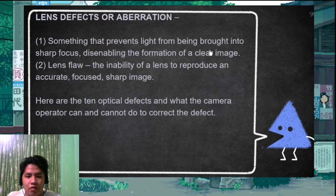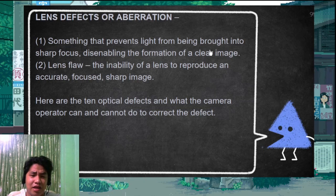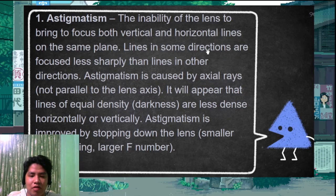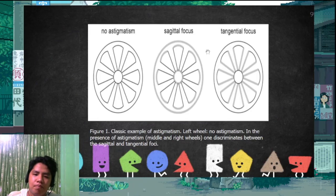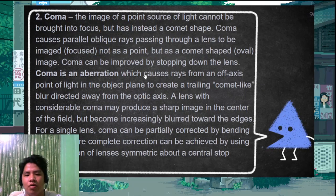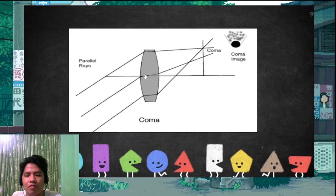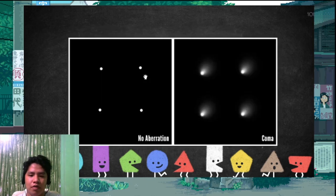Now let's go to lens defects or aberrations — the flaws or diseases of the lens. Astigmatism: the inability to focus vertical or horizontal lines on the same plane — some lines are not in focus. Coma: when a point or circle cannot be brought into focus, but instead produces a comet shape. The nearest focus produces a comet-shaped image with a tail, as seen in comparison pictures with and without coma.